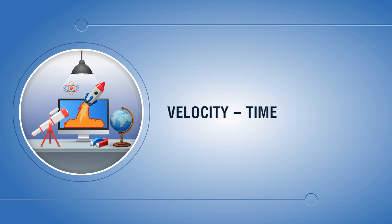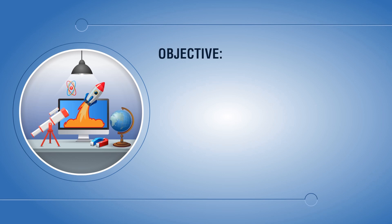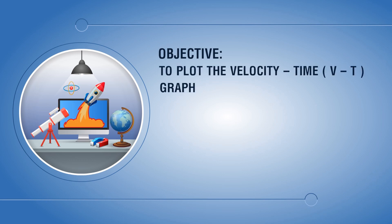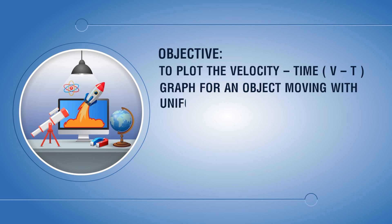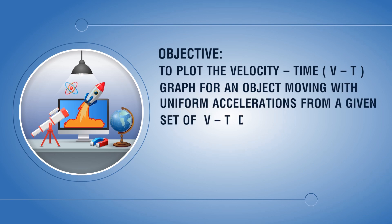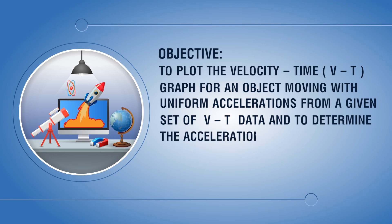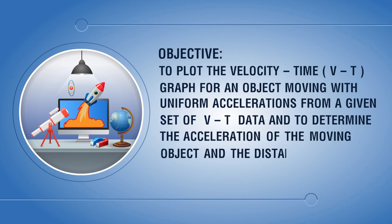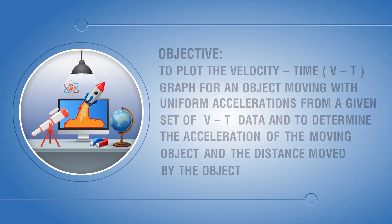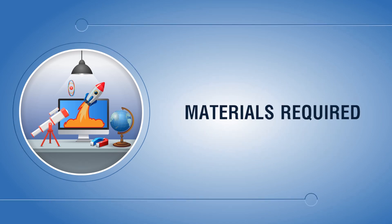Velocity-time (VT) graph. Objective: to plot the velocity-time VT graph for an object moving with uniform acceleration from a given set of VT data, and to determine the acceleration of the moving object and the distance moved by the object.